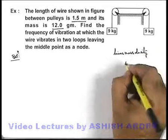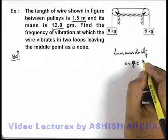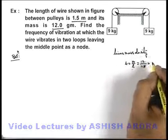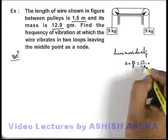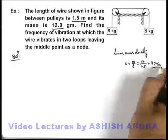Linear mass density μ can be written as m by l. So this will be 12 by 1.5, this can be written as 120 by 15, which is 8 grams per meter. This is the linear mass density.